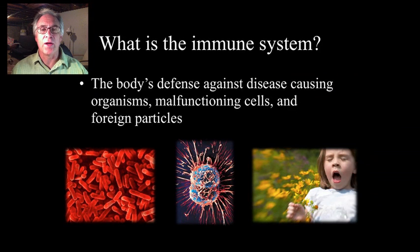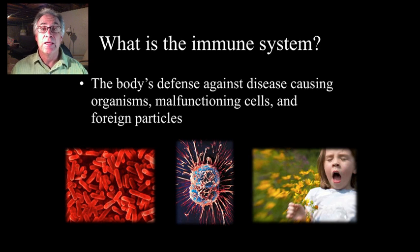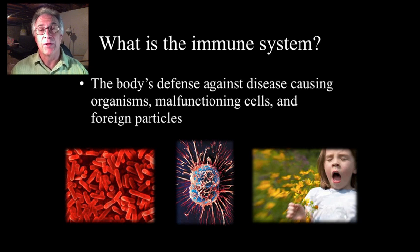I'd like to start off by reminding everybody what an immune system is, because it's really the body's defense mechanism. When there's an organism like a pathogen, a malfunctioning cell, or any kind of foreign particles, that's considered a breach by our body. And the immune system jumps into action with a variety of different chemicals, but also actions from white blood cells in particular that I'd like to talk to you about today.